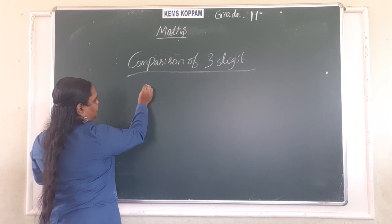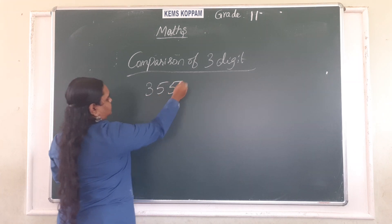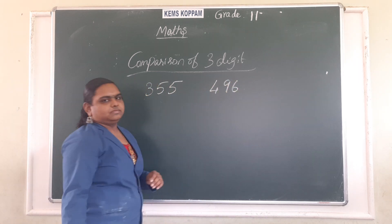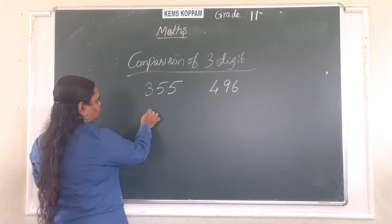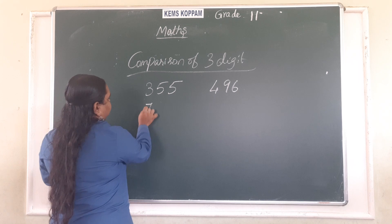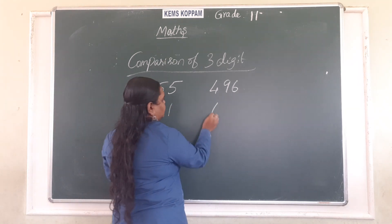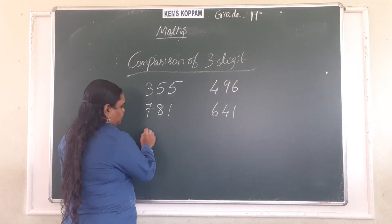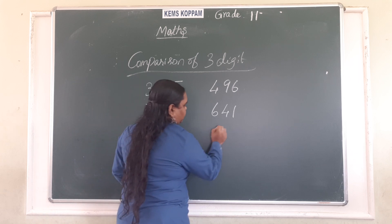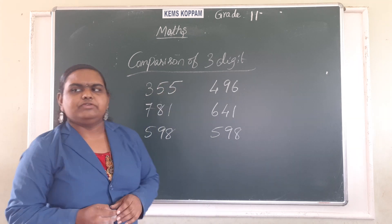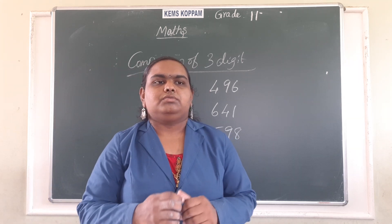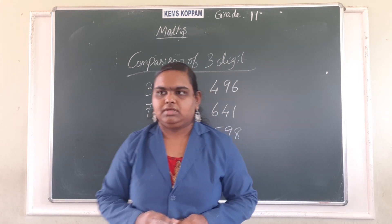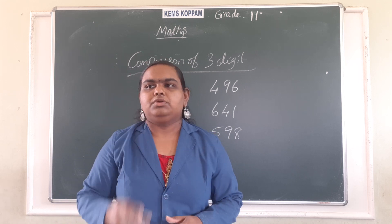We write three digit numbers. Three hundred and fifty-five and four hundred and ninety-six. Next, seven hundred and eighty-one and six hundred and forty-one. Next, five hundred and ninety-eight. I wrote three sets of numbers. Now you have to tell which is the lesser number, which is the greater number, which is the smallest and which is the greatest.